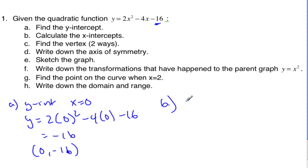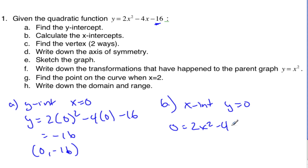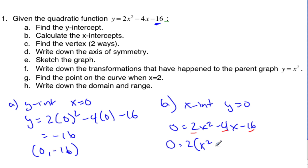Next, find the x-intercepts. To find the x-intercepts, we set y equal to zero: 0 = 2x² − 4x − 16. We look for common factors — there's a 2 in all terms, so we factor it out, giving 2(x² − 2x − 8).